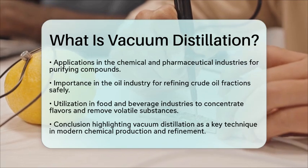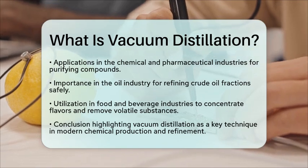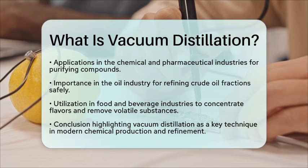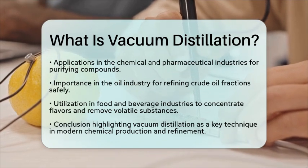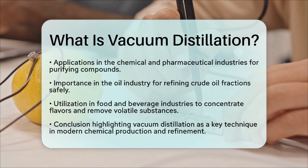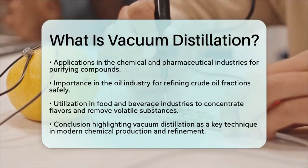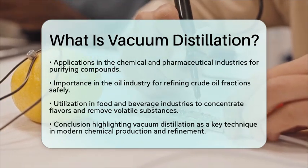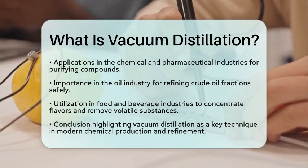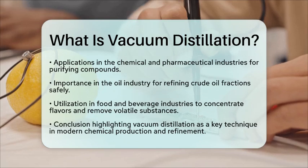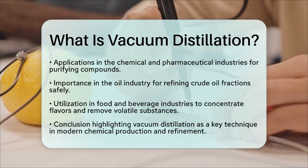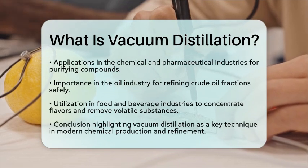In essence, vacuum distillation is a refined technique developed within the history of chemical engineering. It addresses the challenges of separating high-boiling or heat-sensitive compounds. By reducing the pressure inside the distillation apparatus, it lowers boiling points and allows for efficient and gentle separation of components. This method remains a critical process in modern chemical production and refinement.